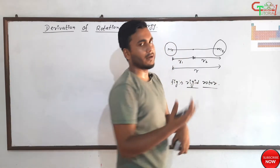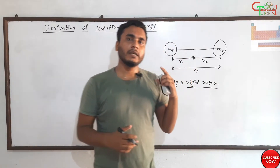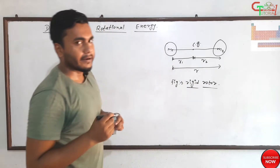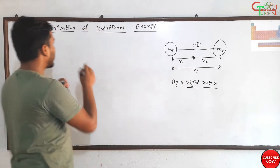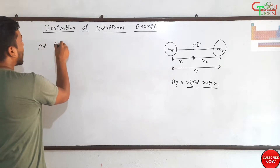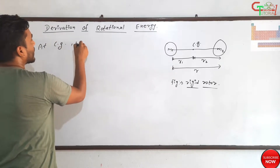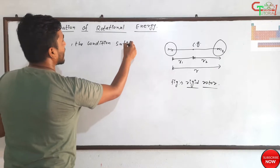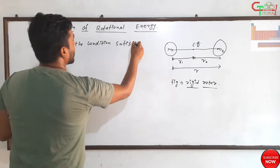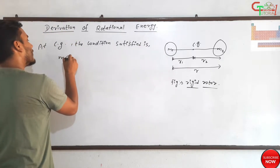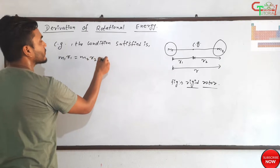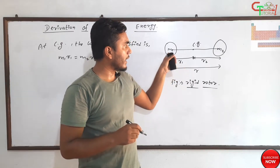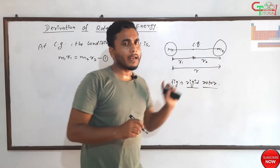Similarly, the distance between the center of m2 and the center of gravity is r2, and the distance between the two atoms is r. This is a rigid rotor — meaning we consider a condition in which the bond length is fixed. This is called the center of gravity. At the center of gravity, the condition satisfied is: m1·r1 = m2·r2. Let's call this equation number one.